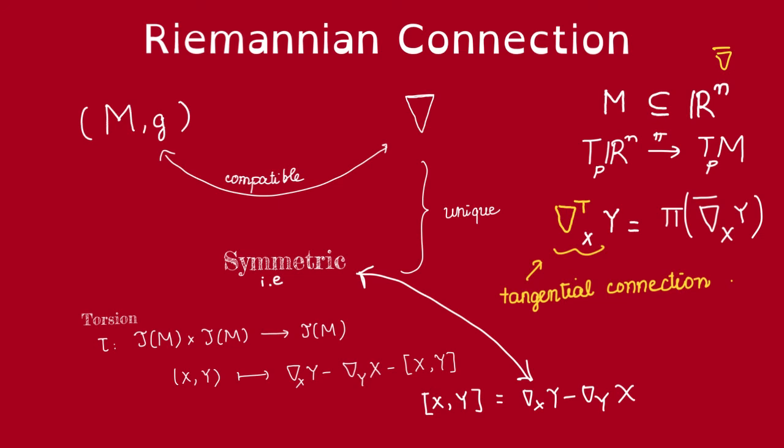It preserves the notions that we can define from the Riemannian connection, for example the corresponding geodesics or covariant derivative of vector fields along curves and so on. So that naturality together with uniqueness is what makes the Riemannian connection very useful.